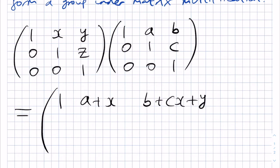Down here we have 0. Next, we have, as required, 1. Then we have C plus Z, and then we have 0, 0, and finally 1. So, luckily, this is another matrix of the desired form.